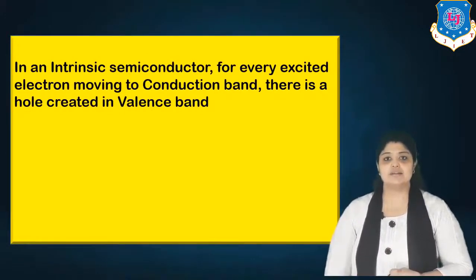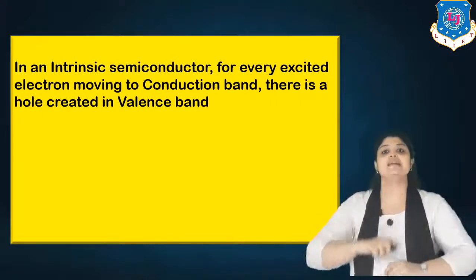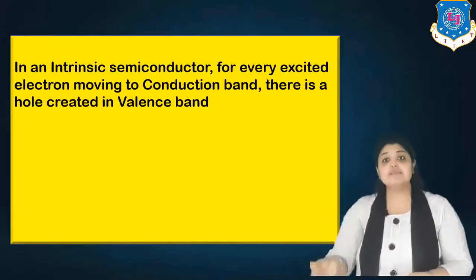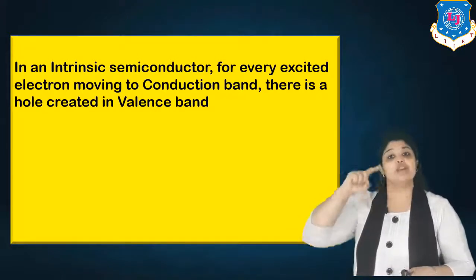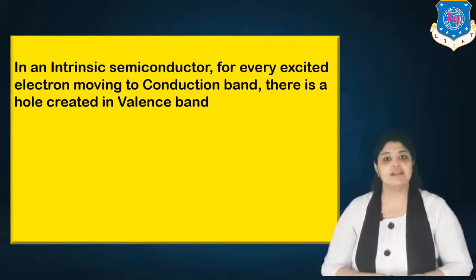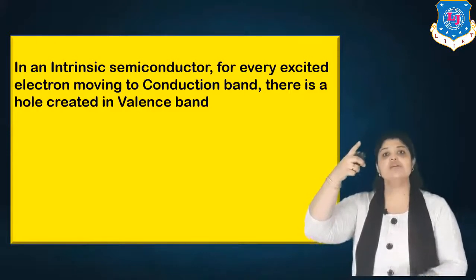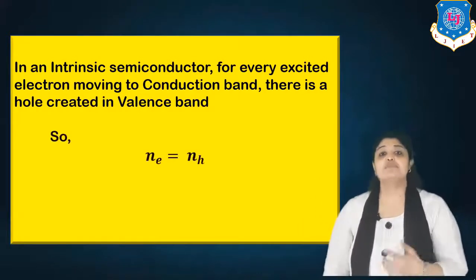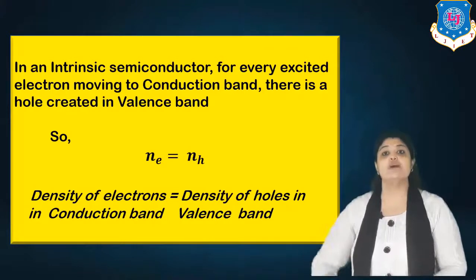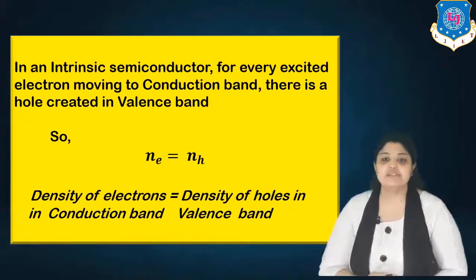For intrinsic semiconductors, for every excited electron which moves to the conduction band, a hole is created in the valence band. When we give energy to electrons, they move to the conduction band and correspondingly a hole is created in the valence band. So the total number of electrons in the conduction band is equal to the total number of holes in the valence band — that is, NE equals NH. This equation holds true for intrinsic semiconductors.